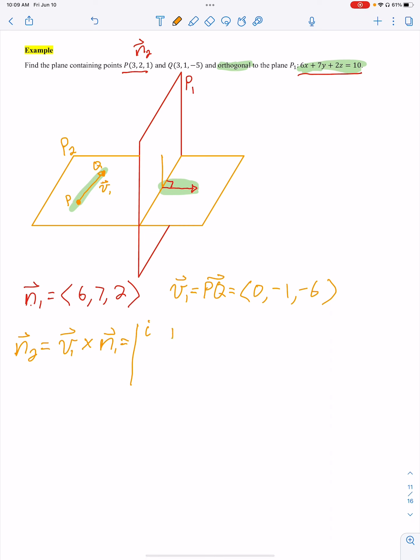So let's multiply these with the cross product. So I have i, j, k, and then we get 0, negative 1, negative 6, 6, 7, 2. To keep my video short, I'm going to go ahead and give you what this comes out as. It's 40i minus 36j plus 6k. Notice that everything is divisible by 2, so we're going to divide everything by 2 just to make our numbers smaller.